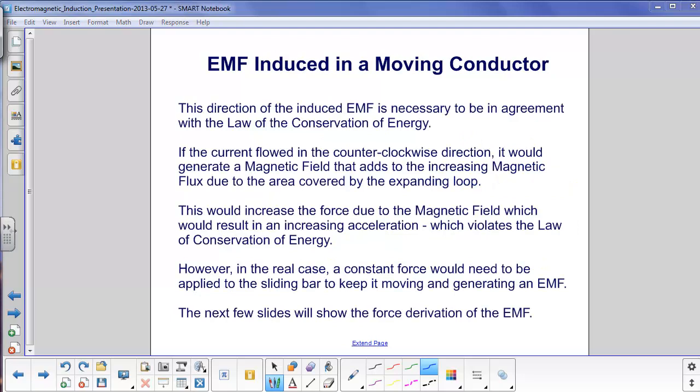The direction of the induced EMF, as mandated by Lenz's law, is necessary to be in agreement with the law of the conservation of energy. That was mentioned earlier, but we really didn't show the reasoning for it. This example with the sliding bar is a perfect example. For example, let's assume the current flow, the induced current flowed in the counterclockwise direction. So if it did, that would generate a magnetic field within the loop that came out of the board, and would add to the increasing magnetic flux due to the area covered by the expanding loop.